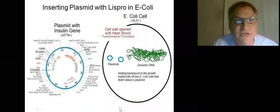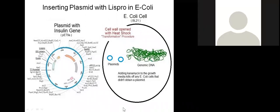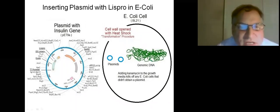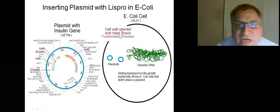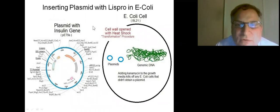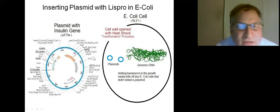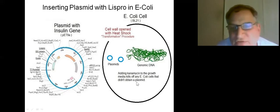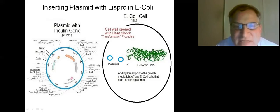For inserting the Lispro plasmid into E. coli, we use a transformation procedure called heat shock. During that brief high-heat period, the cell wall opens up and the plasmids go in. We use kanamycin for selection, so only cells that have the plasmid with the kanamycin resistance gene will survive.